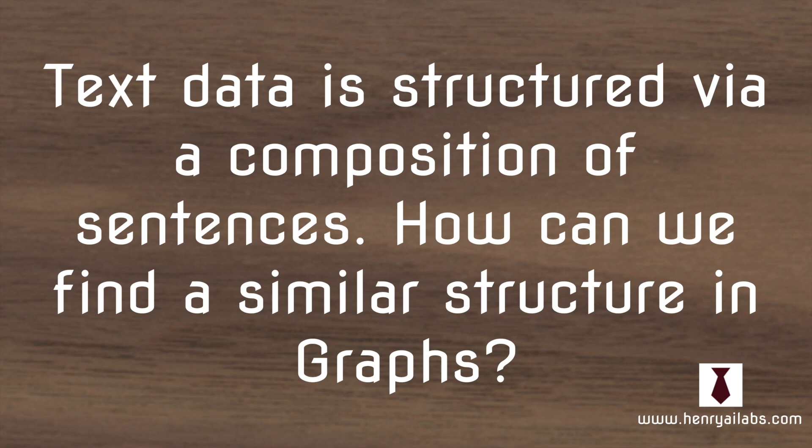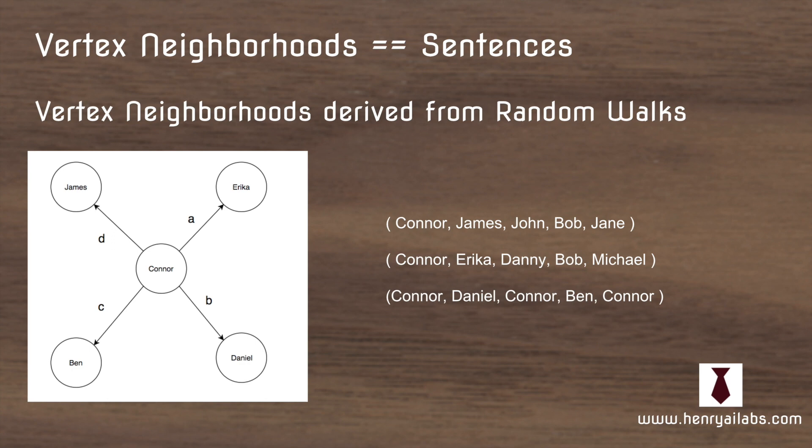So text data is naturally structured via sentences. So how can we find a similar structure in graphs? The answer to this is random walks. So we can take random walks on graphs to construct vertex neighborhoods. And vertex neighborhoods are used in the same way that sentences are used in the skipgram model.